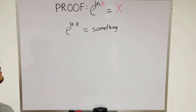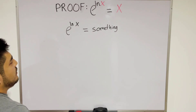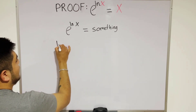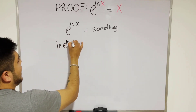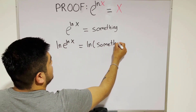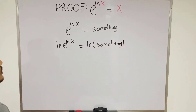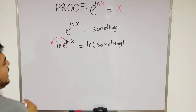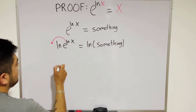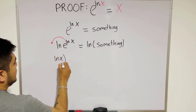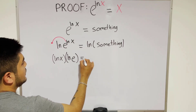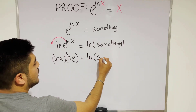What can we do now? Well, what about if we apply ln to both sides? I mean, ln of e to the ln x equals ln of something. Now we can put ln x in front of this equation due to log properties, you know? I mean, ln x times ln e equals ln something.